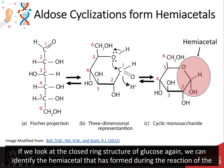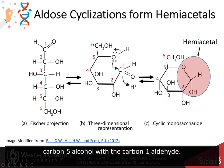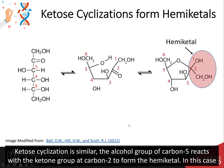If we look at the closed ring structure of glucose again, we can identify the hemiacetal that is formed during the reaction of the carbon 5 alcohol with the carbon 1 aldehyde. Ketose cyclization is similar — the alcohol group of carbon 5 reacts with the ketone group of carbon 2 to form the hemiketal.